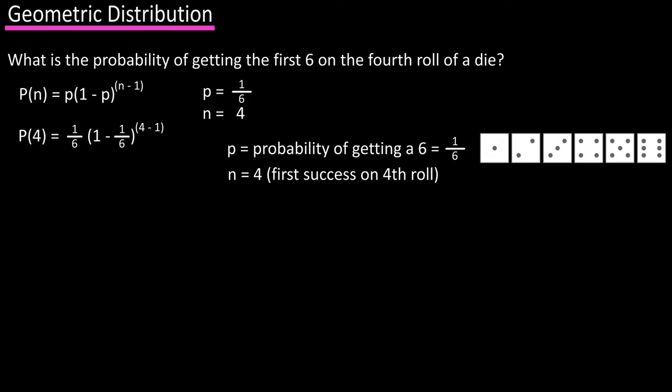So we have probability of four equals one over six times one minus one over six raised to the four minus one. Calculating out, as I've done on the screen, we get 125 over 1296, which equals 0.096, or 9.6%. As another example,